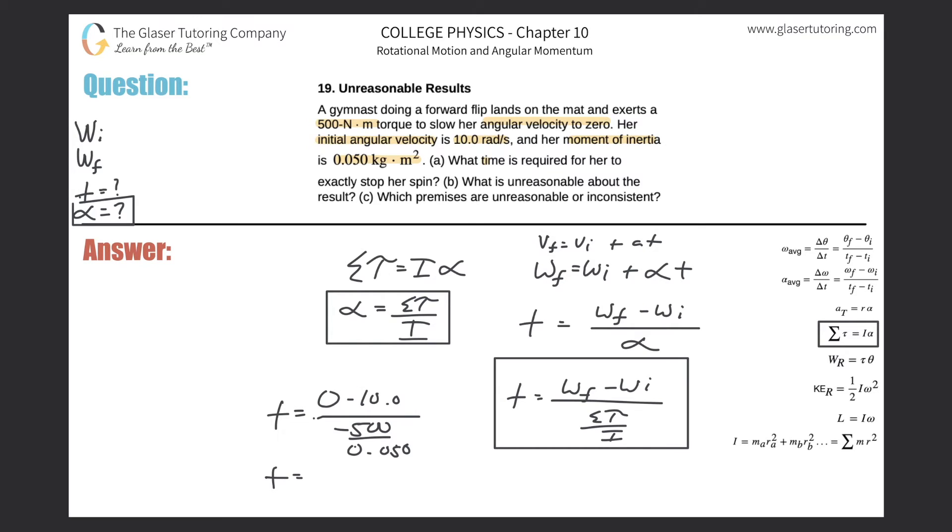So don't overthink it. 10 divided by 500 divided by 0.05, and we get a value of 0.001 seconds. That is the time.